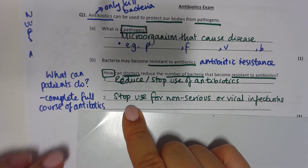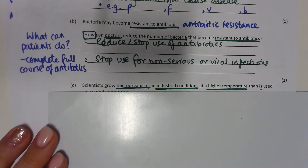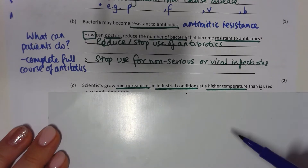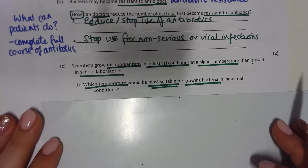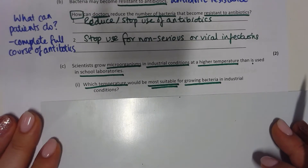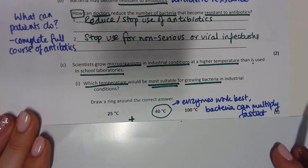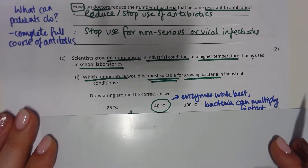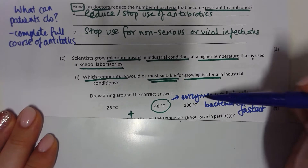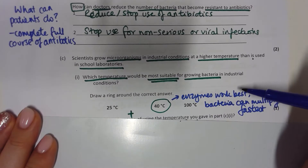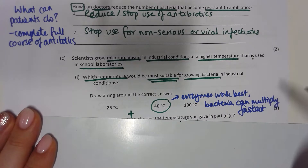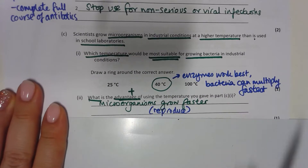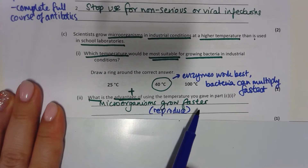Scientists can grow microorganisms at a higher temperature compared to school laboratories. What temperature is most suitable for growing bacteria? The answer is 40 degrees Celsius, because that's when enzymes work best and bacteria can multiply the fastest. The advantage of this is that microorganisms reproduce faster.